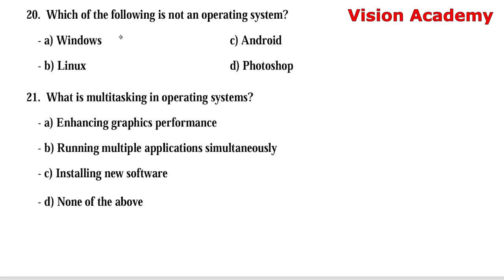Question number 20: Which of the following is not an operating system? Option A: Windows. Option B: Linux. Option C: Android. Option D: Photoshop. Windows, Linux, and Android are all examples of operating systems. In the question, they asked which one is not an operating system. Photoshop is an application program, so Option D, Photoshop, is the right answer.